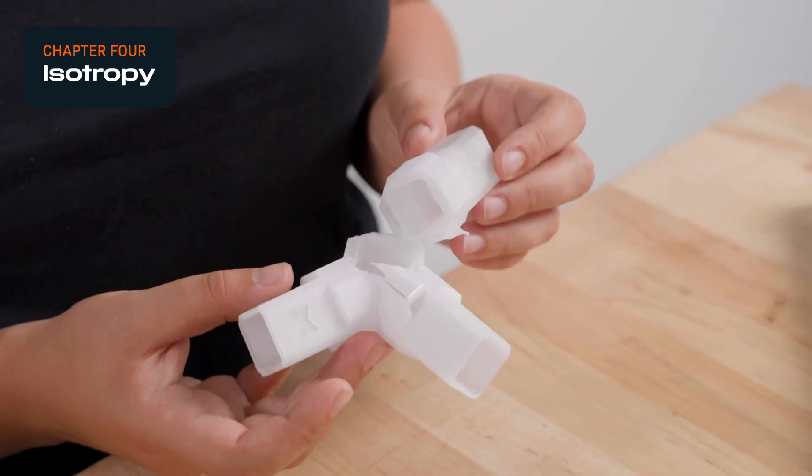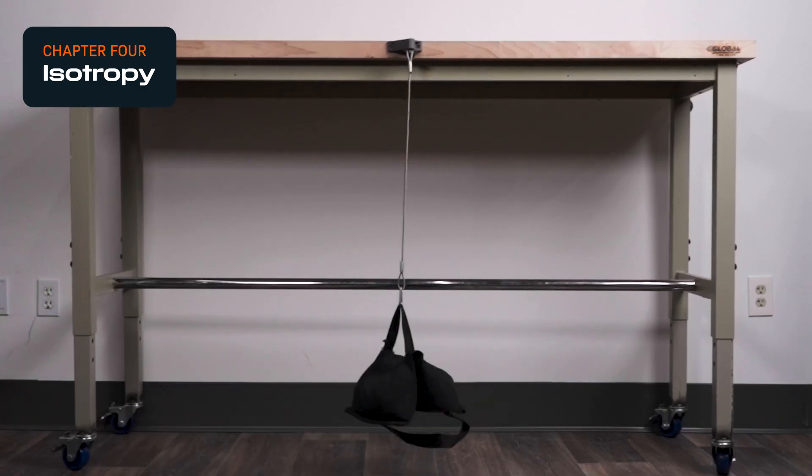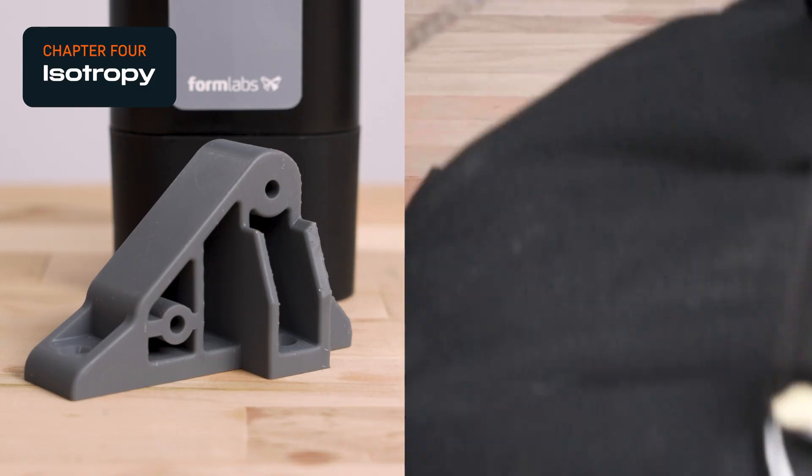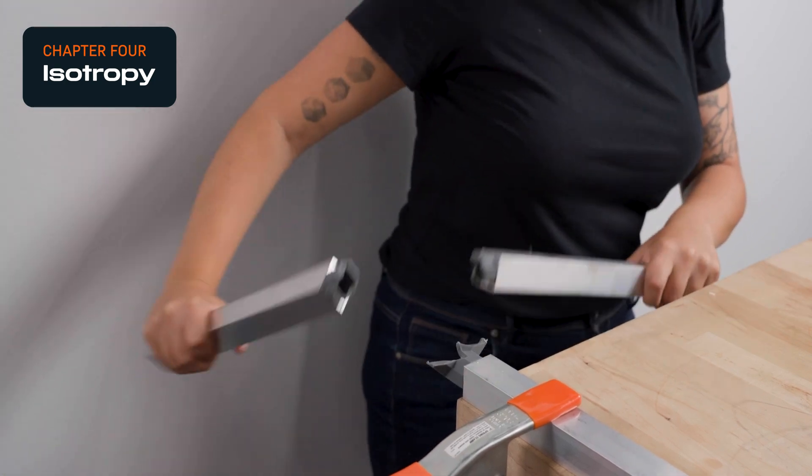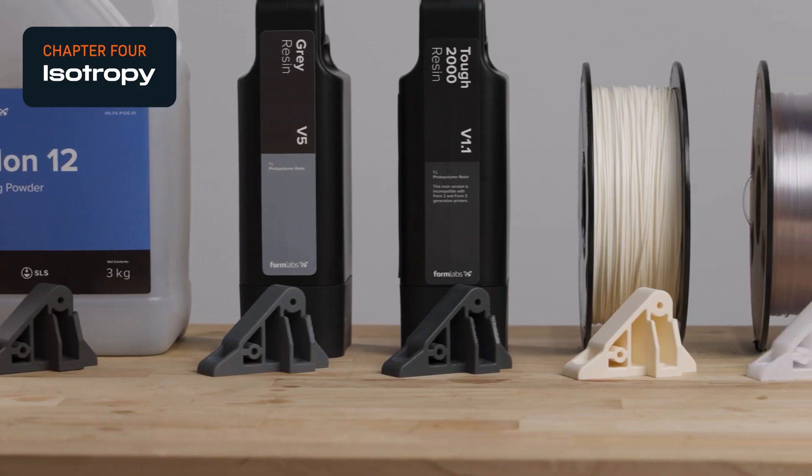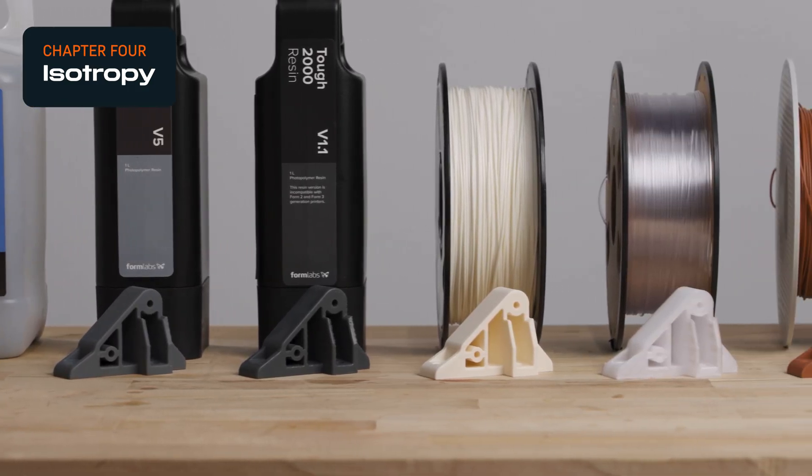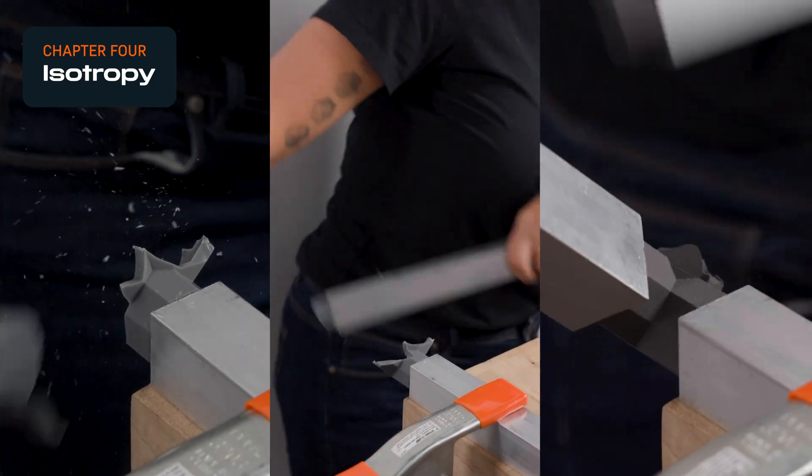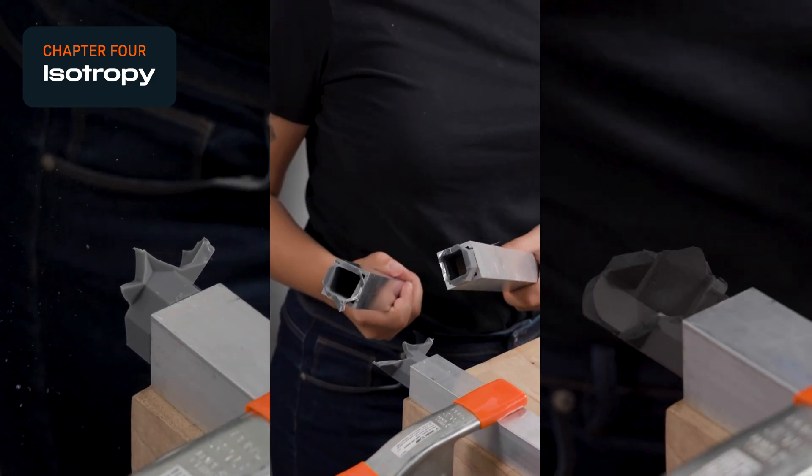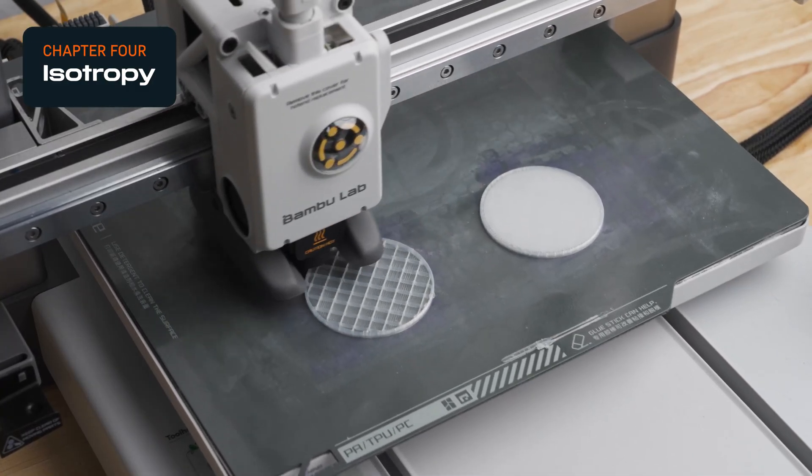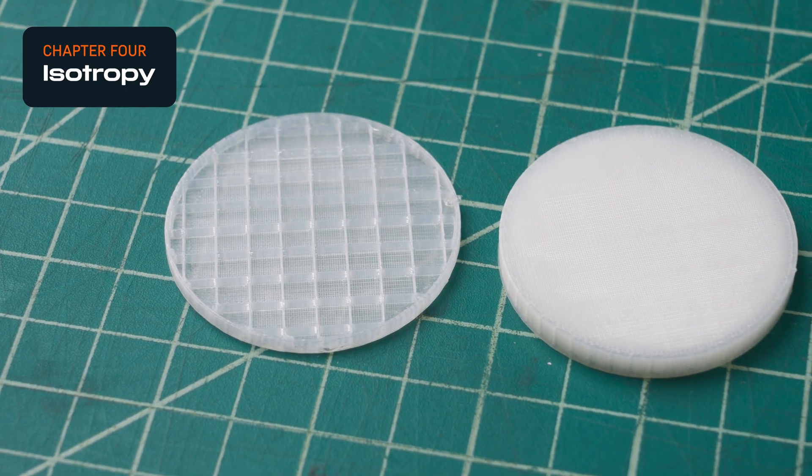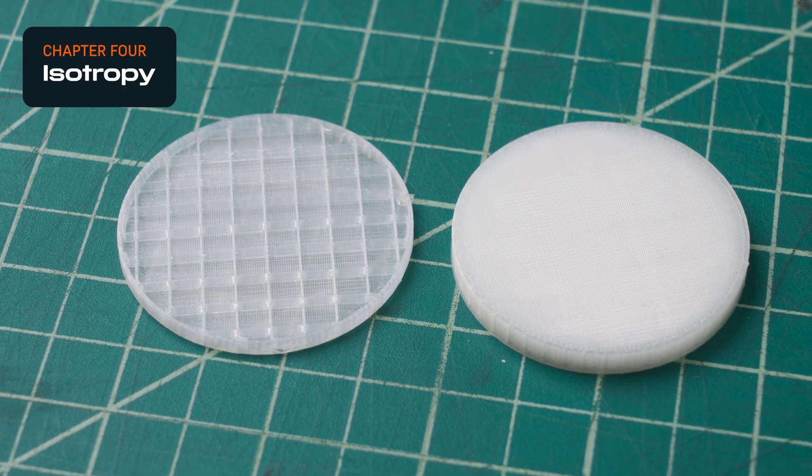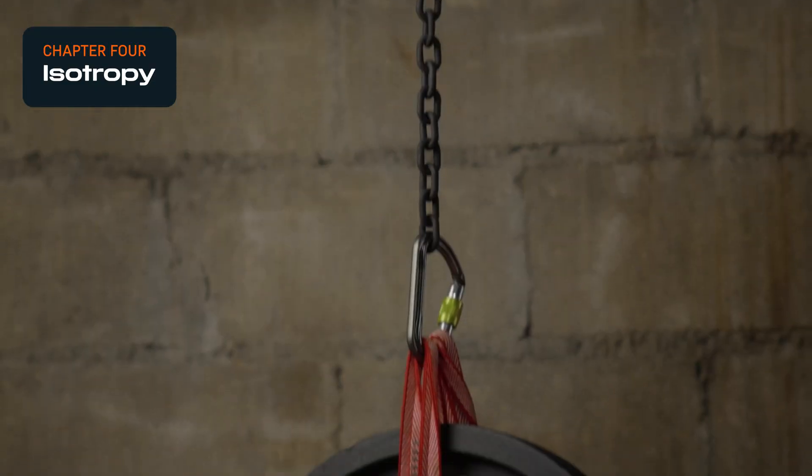In contrast, SLA resin 3D printers create isotropic parts, which means they are uniformly strong in all directions. SLS 3D printers create parts that are anisotropic, with slight differences in strength between the Z axis and the X, Y axes. While both FDM and SLS are anisotropic, FDM exhibits greater differences in mechanical performance across different axes than SLS, and SLS creates stronger parts in general.